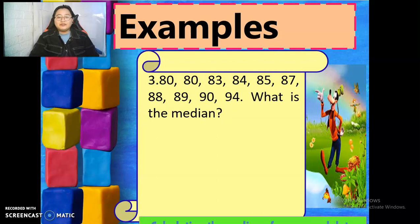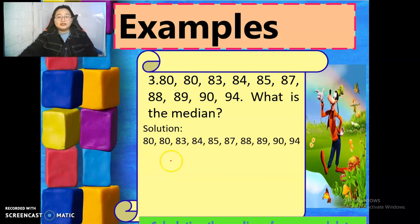How about these data points? 80, 80, 83, 84, 85, 87, 88, 89, 90, 94. What is the median? Let's count how many numbers we have. First, let's arrange the numbers. So we have 1, 2, 3, 4, 5, 6, 7, 8, 9, 10. We have 10 data points.